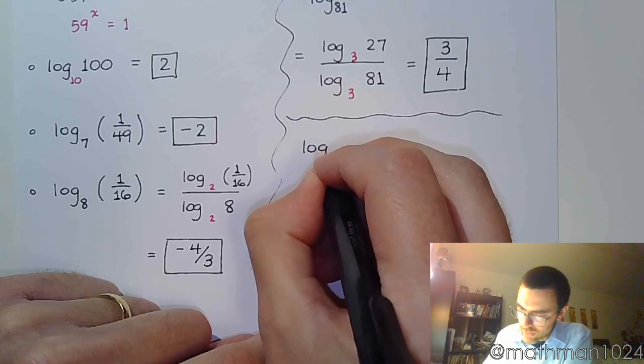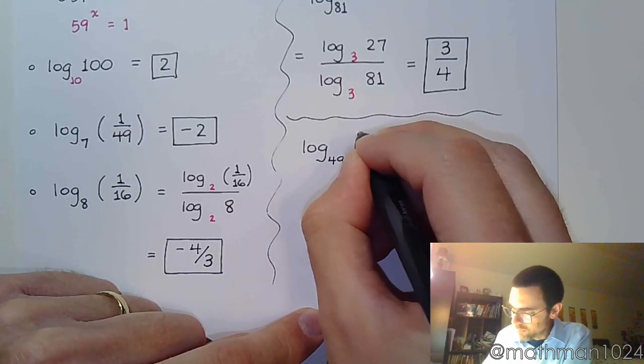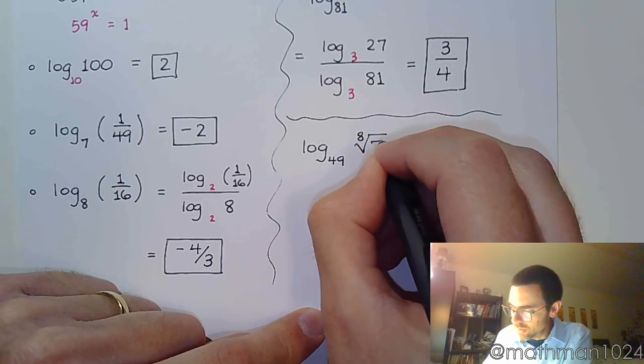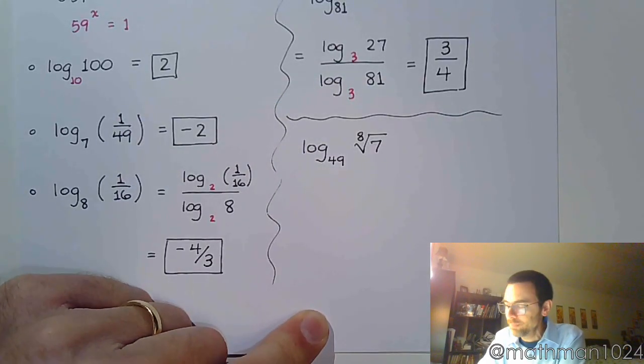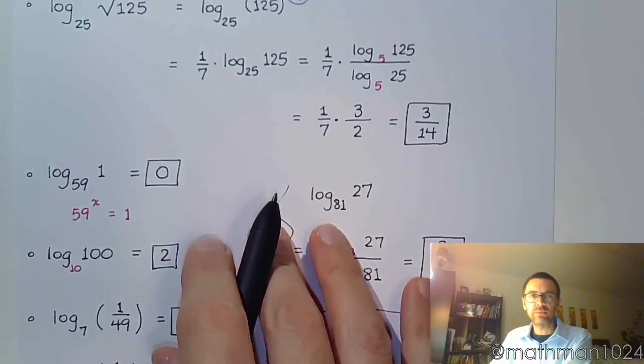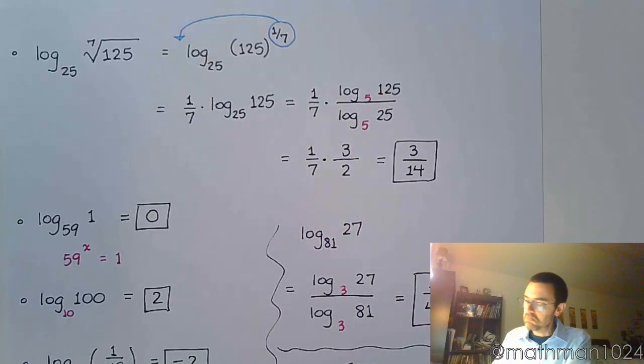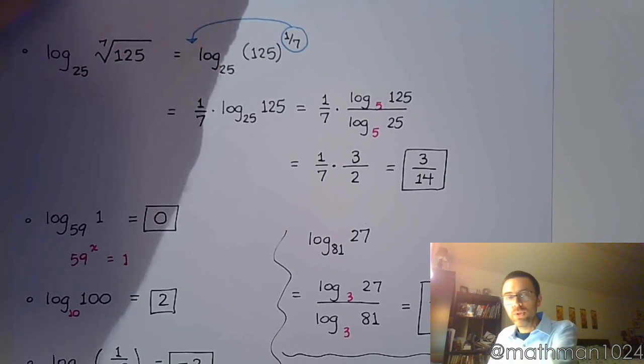Let's take log base 49 of the 8th root of 7. So, I suggest that we work this the same way we did one a little bit earlier on this page. It was log base 25. Right? We have the radical, and we pull that power out front. So, maybe we do that here.